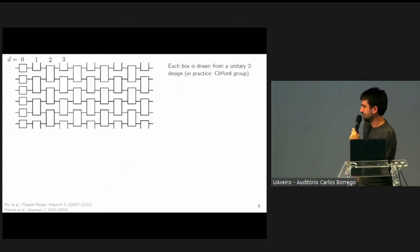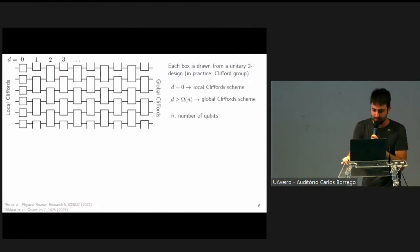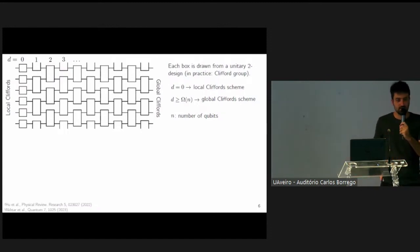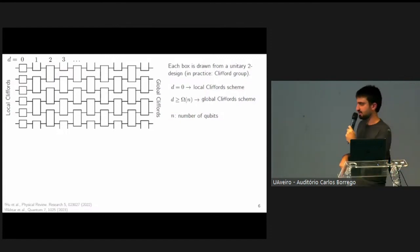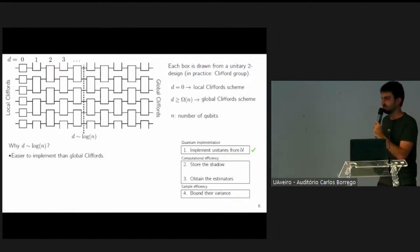So a natural middle ground we find it in random quantum circuits. These are the unitaries that we draw. Each box here is a unitary drawn at least from a two design, but in practice, the Clifford group. I say that this is an intermediate ensemble because at depth zero, this exactly reproduces the local Clifford scheme, while when the depth grows beyond some super linear regime, this approximately implements the global Clifford scheme. This is a relatively natural middle ground, which is considered in other works by Hu and Akhtar and others. But in our case, we focus on the regime where the depth scales logarithmically in the system size. This is for a number of reasons.